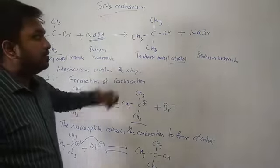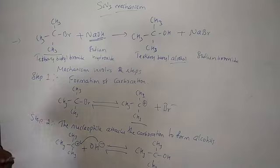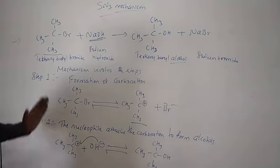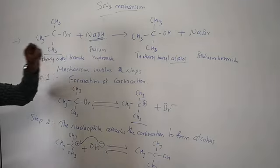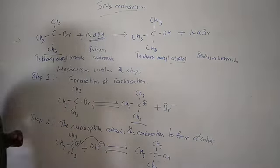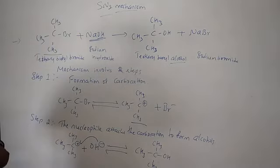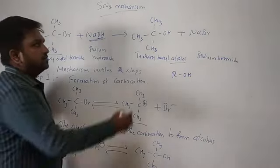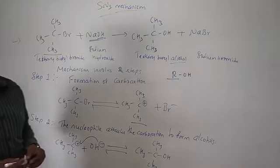This is the simple mechanism for the conversion of tertiary butyl bromide to tertiary butyl alcohol. In an examination, if asked how tertiary butyl alcohol is obtained from tertiary butyl bromide with sodium hydroxide, you explain this SN1 mechanism. Bromine is substituted by the hydroxyl group and you get tertiary butyl alcohol.